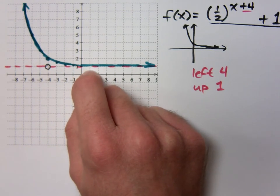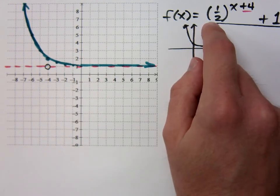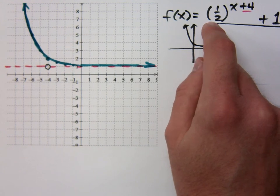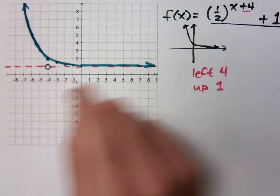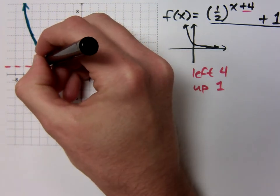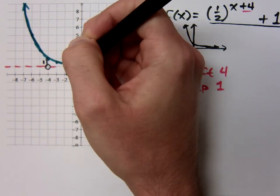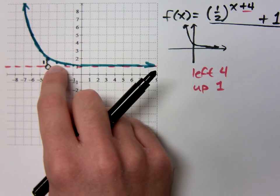What are you using to multiply or divide by? The base — the 1 half. But what is 1 half getting multiplied by? If you go over one unit, multiply by a half. If you go over two units, multiply by a half again. We start right here — the basic value right here is 1. This is what I'm multiplying times 1 half. That's the 0, 1 point.